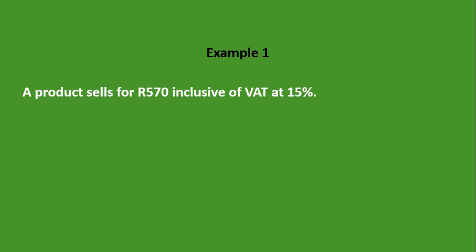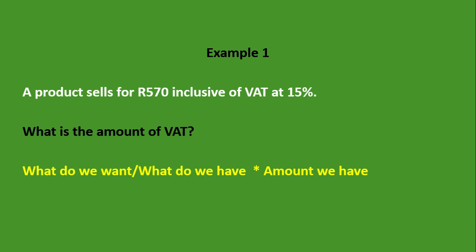A product sells for 570 rand inclusive of VAT at 15 percent. What is the amount of VAT? So we have a product that sells for 570 rand and it has VAT already included. What are we trying to calculate? We are trying to calculate the amount of VAT, which is 15 percent. What do we have? We have 570 rand which is inclusive of VAT, so the product equals 100 percent plus VAT of 15 percent, giving us a total of 115 percent.